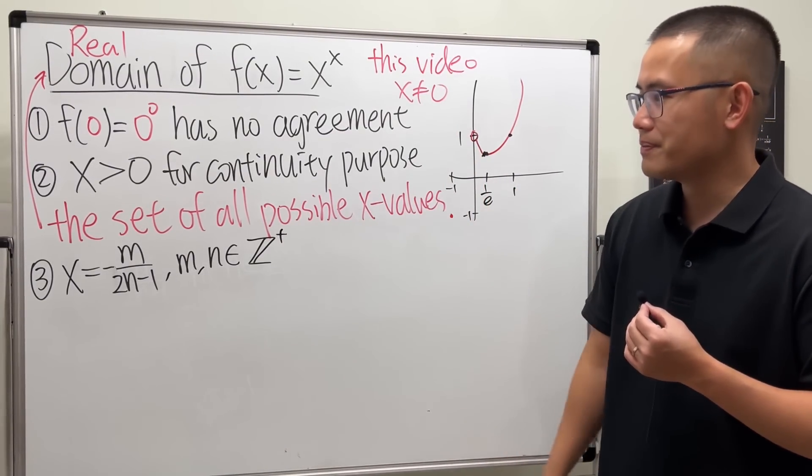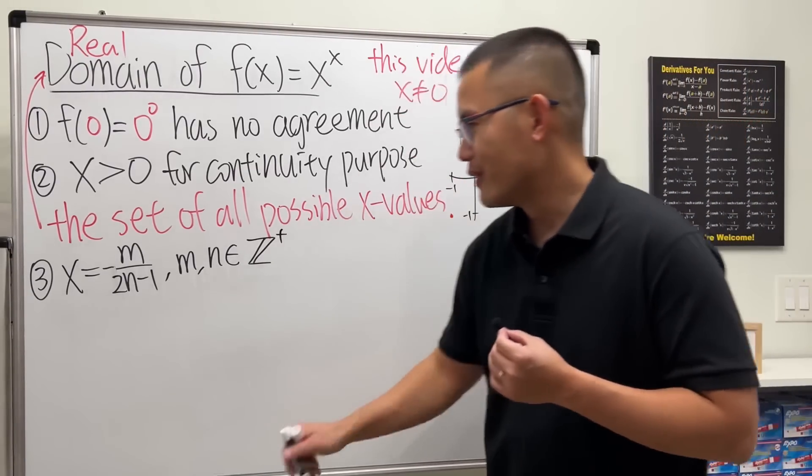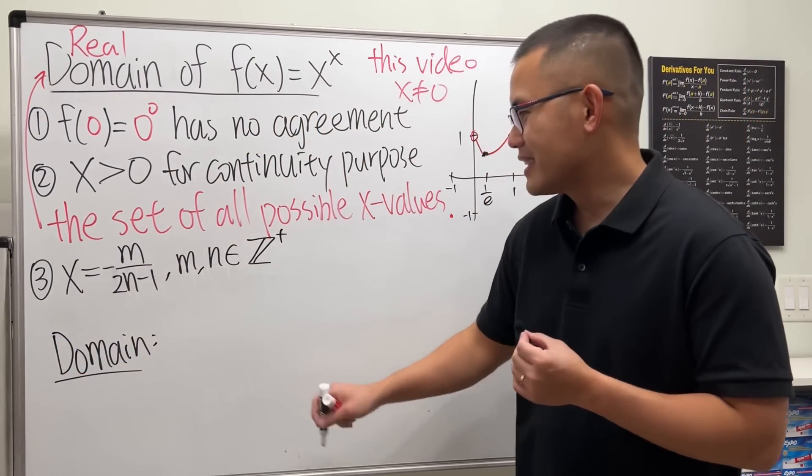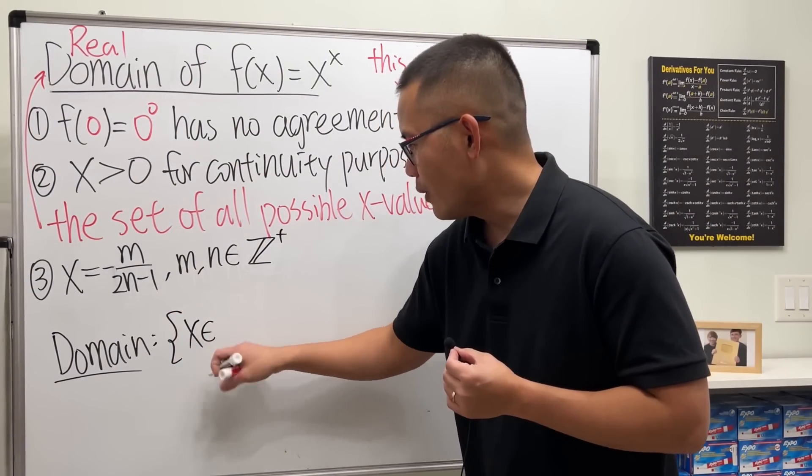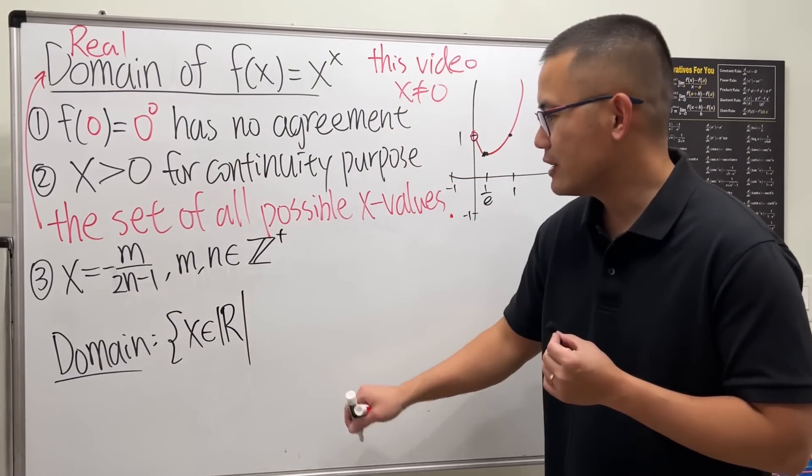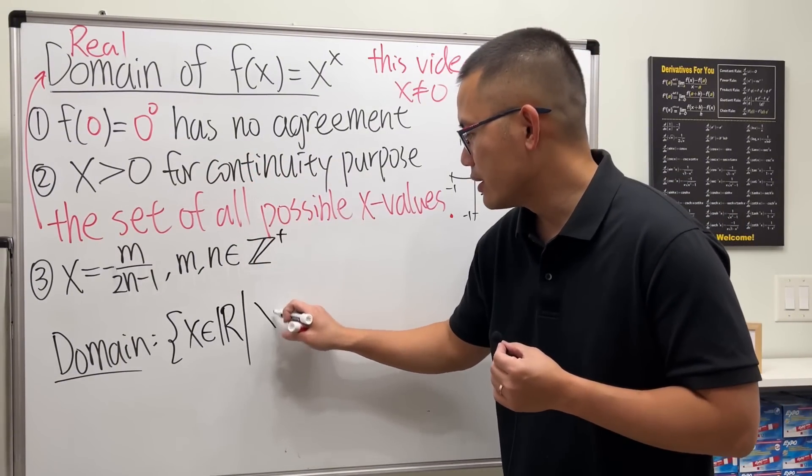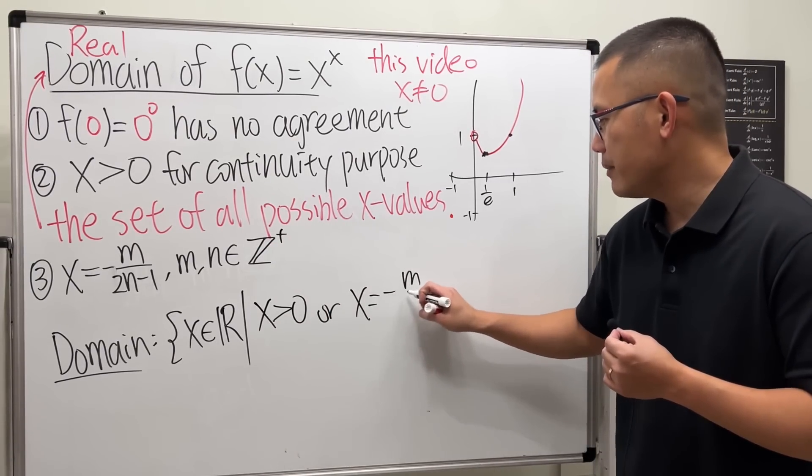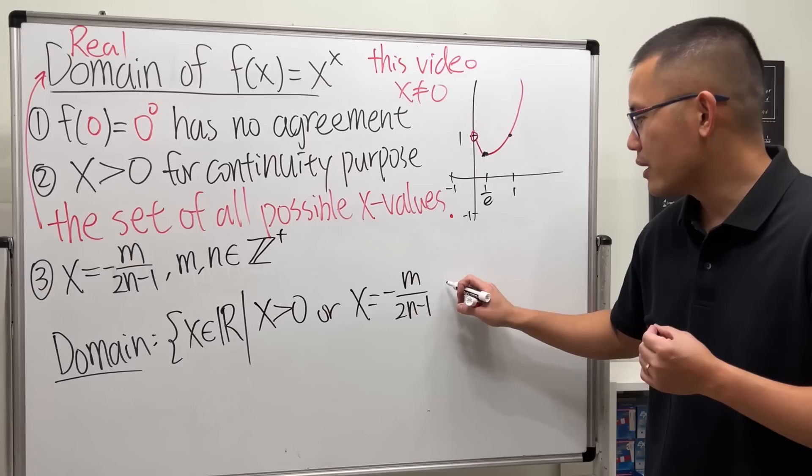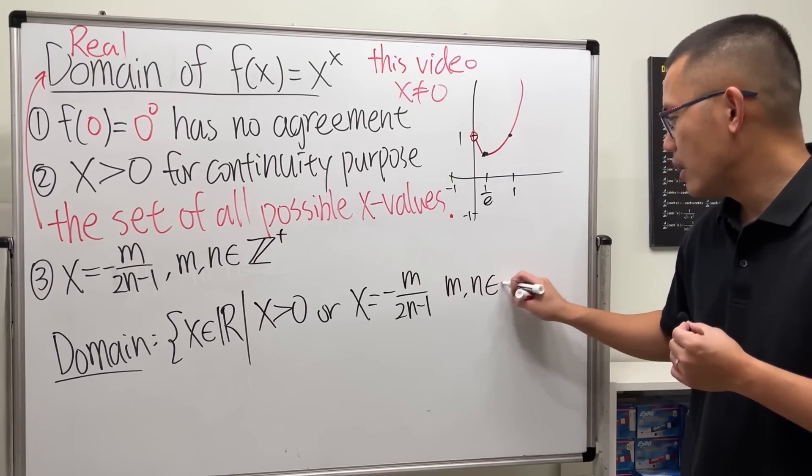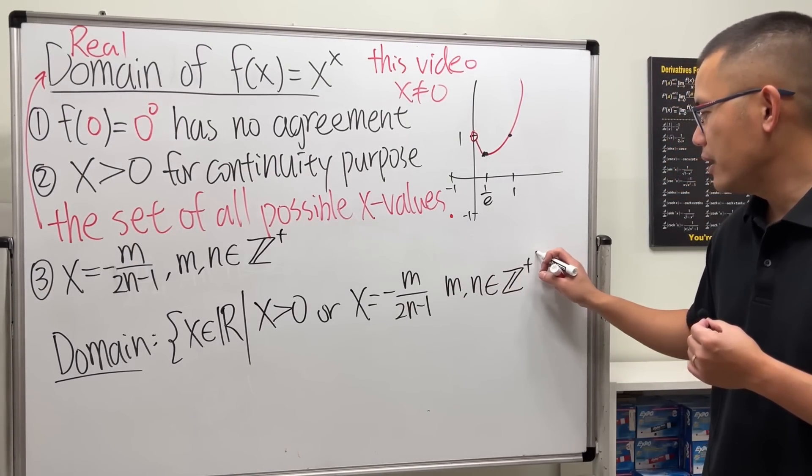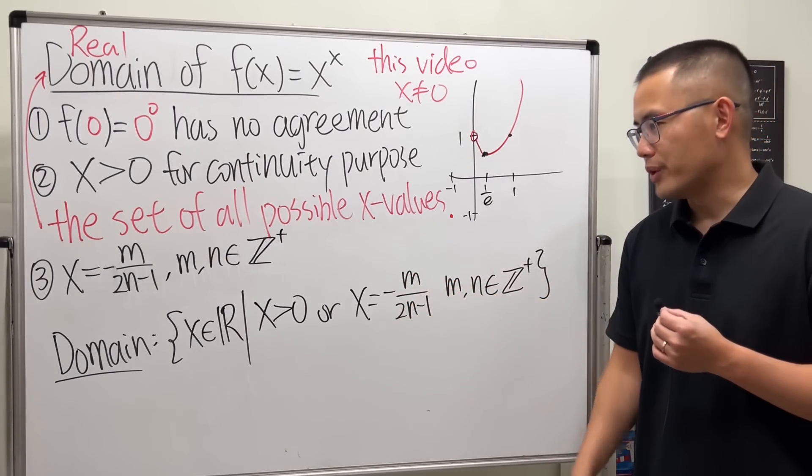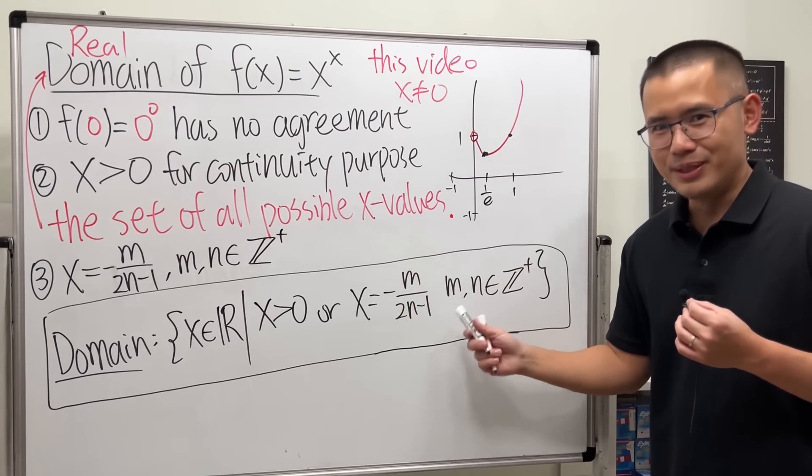That's pretty much it. I'm going to write down the domain now. Hopefully this time we get it right. We have the set of all x in the reals such that either x is greater than zero, or x is in the form of -m/(2n-1), where m and n are positive integers. Because m is a positive integer, we're not going to include zero. That's it. Let me know what you think.